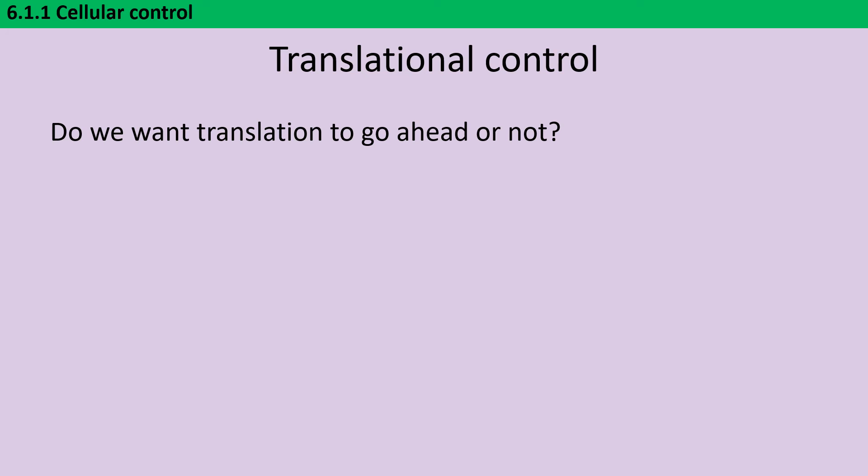The next point at which genes can be regulated is translational control. So basically, do you want translation to go ahead or don't you? The first thing we can do is to try to stop mRNA being broken down. So as we've described,